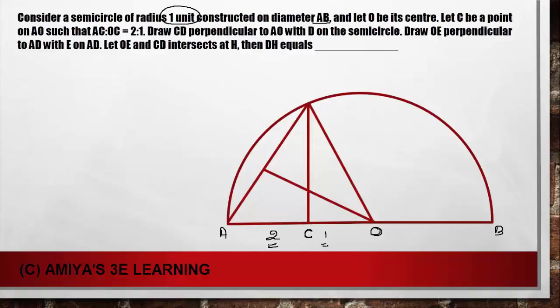We know the radius is one unit. I will use this, but here 2 to 1 is the ratio. And we have a perpendicular line CD, with D being on the semicircle.